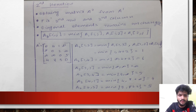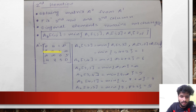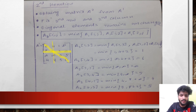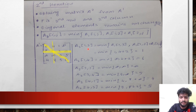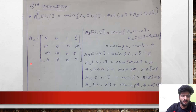In the second iteration, we obtain matrix A2 from A1 by fixing the second row and second column and keeping diagonal elements unchanged. All remaining elements are found using the formula: A2[i,j] = minimum of A1[i,j] and A1[i,2] + A1[2,j]. For example, A2[1,3] = minimum of A1[1,3] and A1[1,2] + A1[2,3] = minimum of 1 and 6, which is 1. Similarly we find all remaining elements of A2.